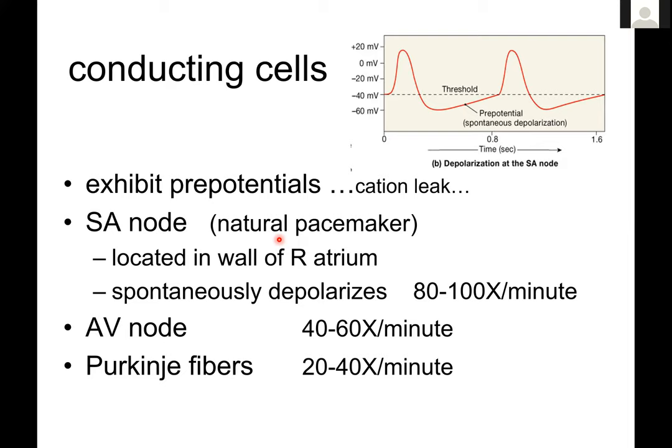The AV node depolarizes spontaneously between 40 and 60 times per minute, and the Purkinje fibers depolarize between 20 and 40 times per minute. The SA node has a depolarization rate sufficient to sustain life and sets the resting average heart rate. If your SA node were to fail, the AV node fires often enough to keep you alive, but not for very long. The Purkinje fibers are not good enough by themselves for any life-saving measure. You really need a functioning SA node — if you lose it, you'll need it replaced with a pacemaker.